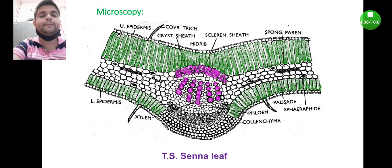In brief, Senna is an example of ISO bilateral leaf because at both surfaces, upper epidermis and lower epidermis, the cellular arrangement is the same. That's why it is an example of ISO - meaning same - bi means two, lateral means side - example of ISO bilateral leaf.